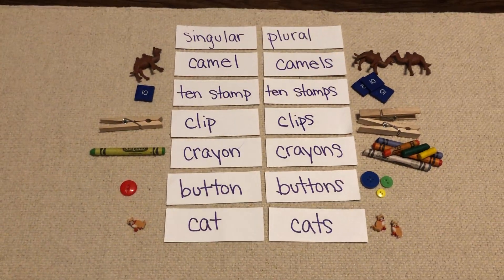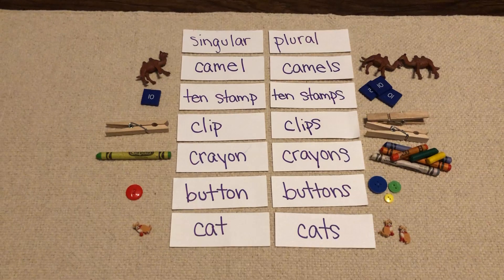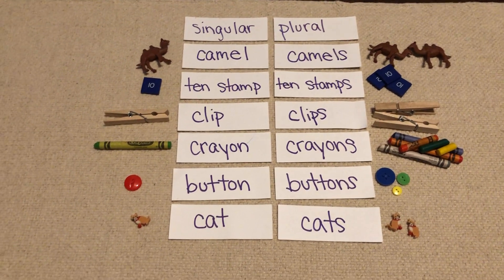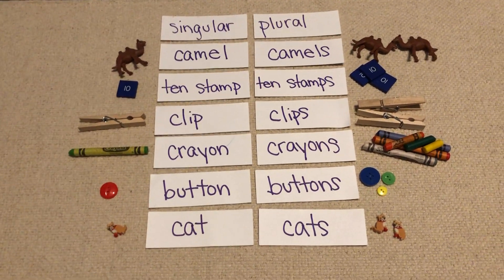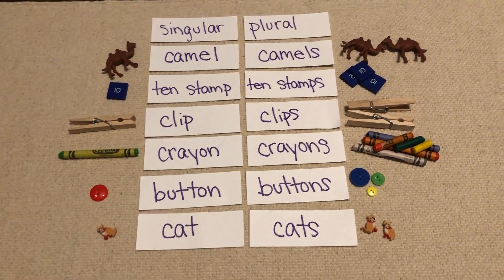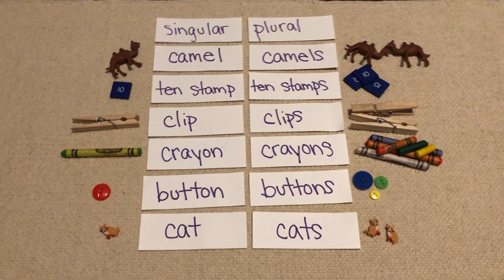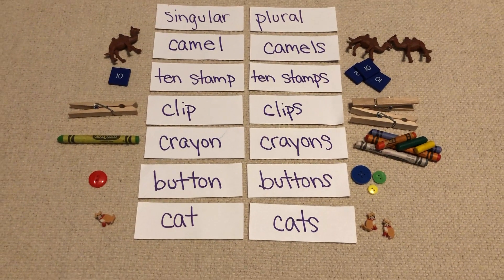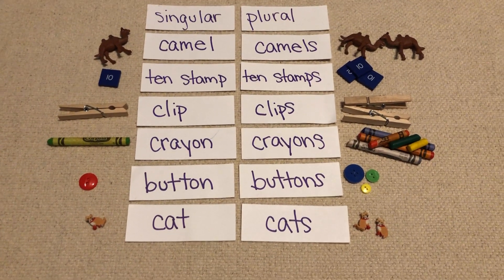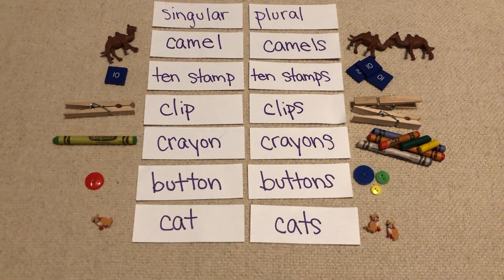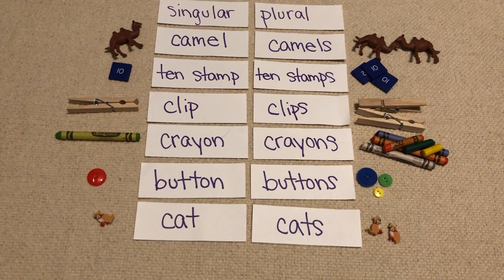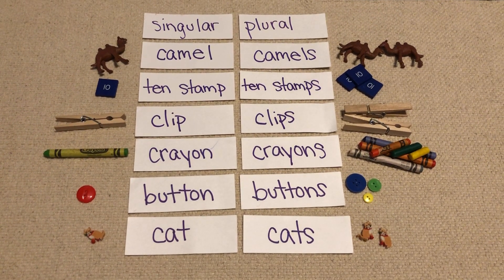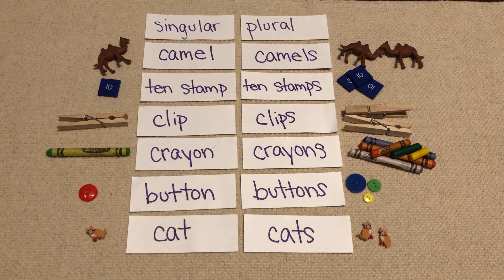And on the right side in my plural column, which if you remember means more than one — it could mean two, three, five, ten thousand — just anything more than one.